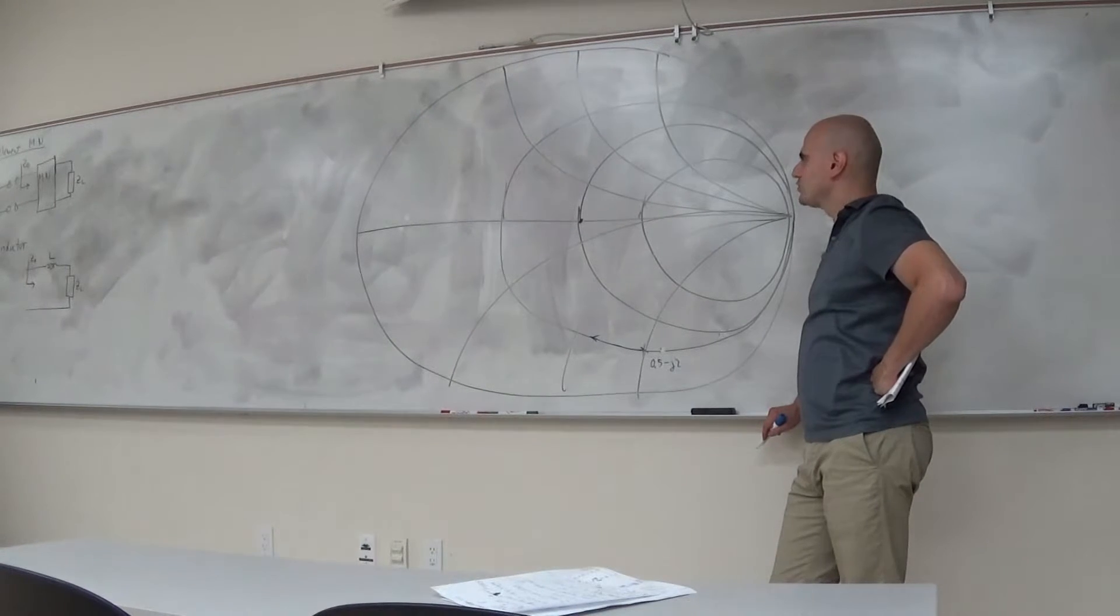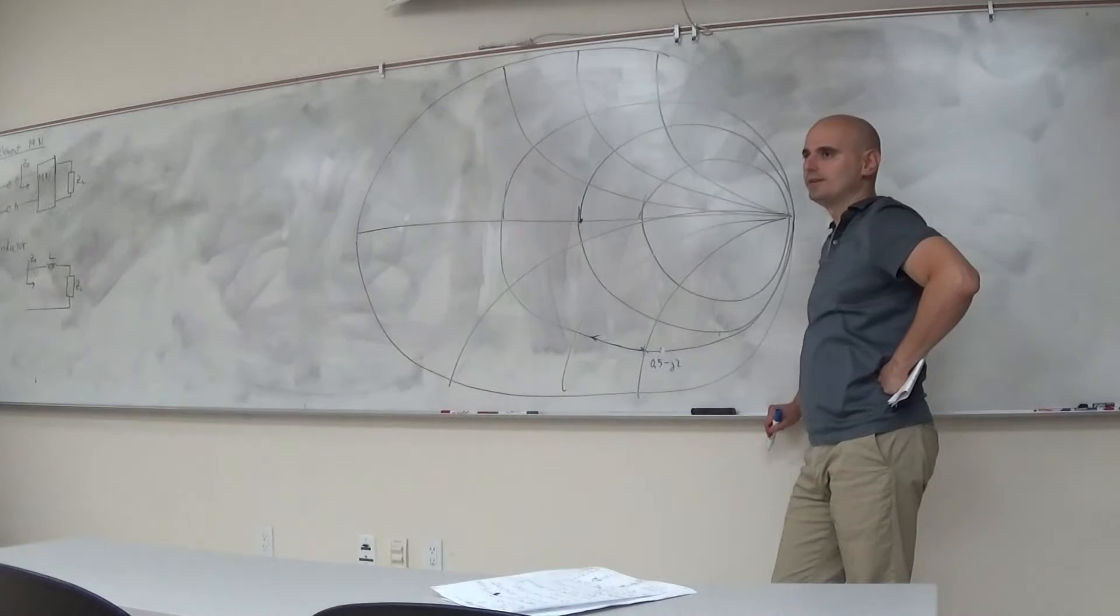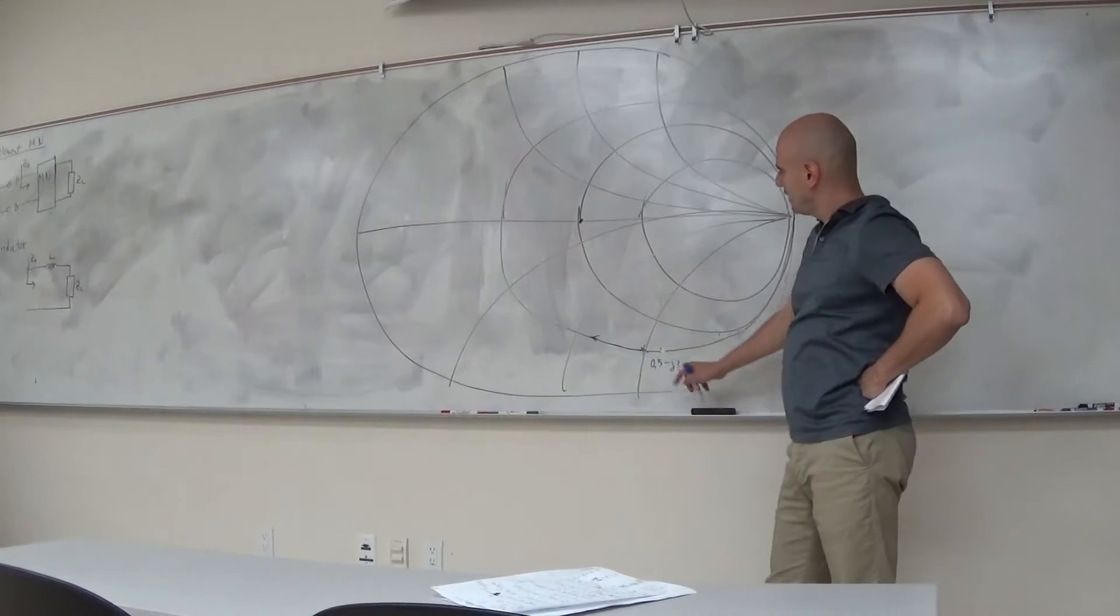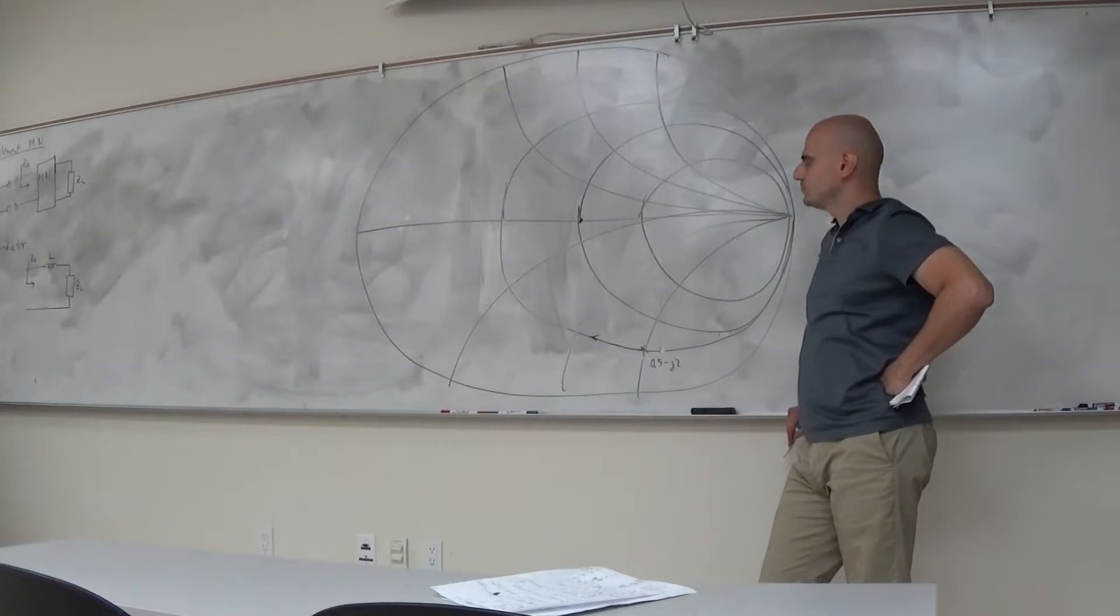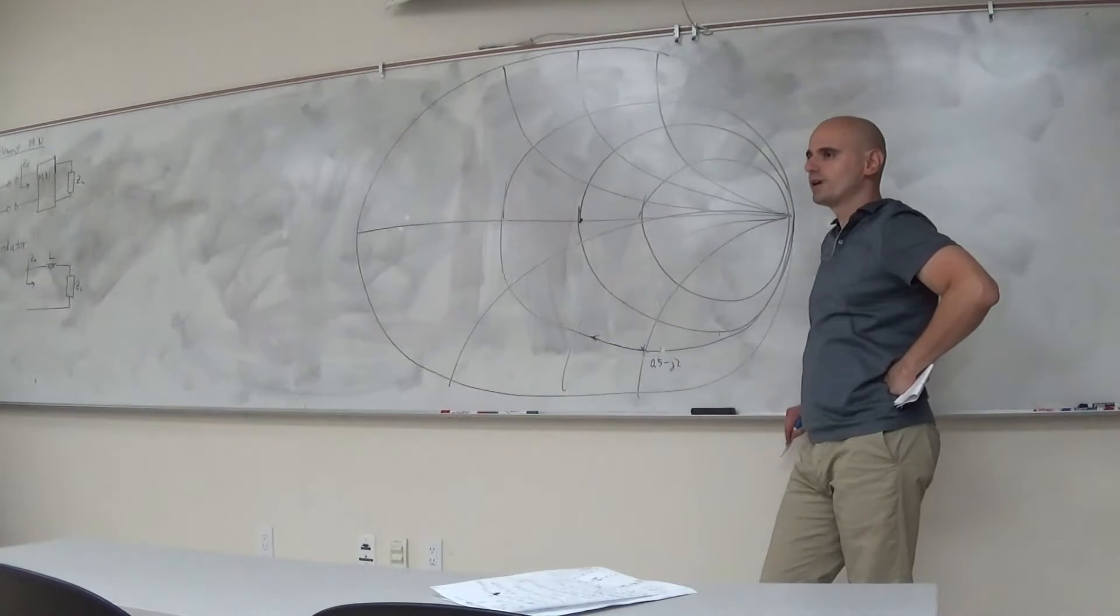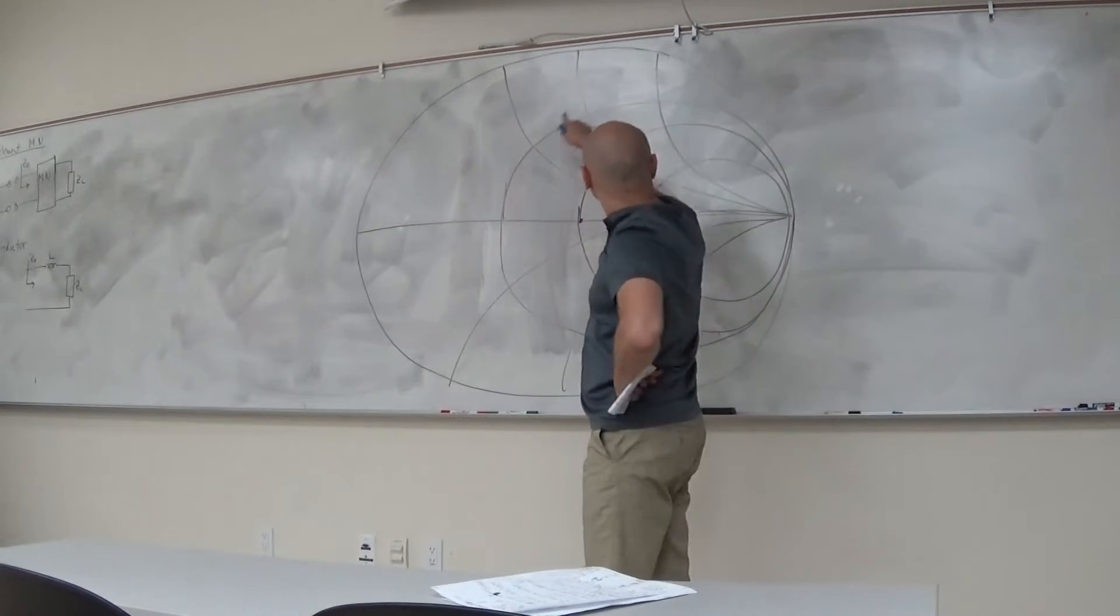Now remember, my goal is to bring this point to the center of the Smith chart. So if I'm starting with a load impedance here, am I going to be able to use an inductor to bring it to the center? No. It's just going to go around the circle.